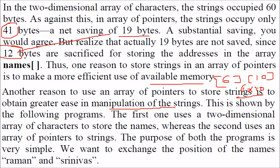we have a greater ease in manipulating the string and the first one, we will see some example. First is going to use a 2D array of pointers to store the names. The second uses the array of pointers to the string. First, for two dimension array of characters as this one and second will have array of pointer. And though both programs are doing the same way, we are trying to exchange the position of the Raman and Srinivas position in the array.